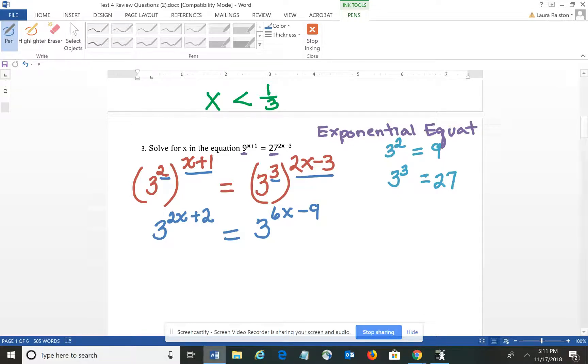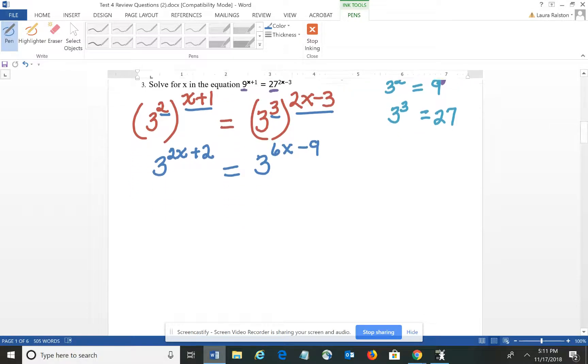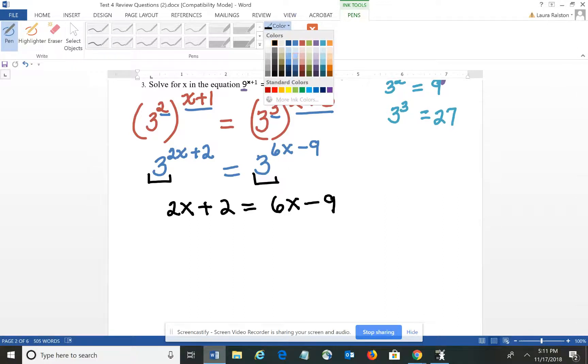Again what I've accomplished at that point is I have the same bases and because I have a base 3 on the left and a base 3 on the right, if the bases are the same, we also know that the exponents would have to be the same. So 2X plus 2 would have to equal 6X minus 9, which is a good old basic everyday algebra equation that I can solve for X.